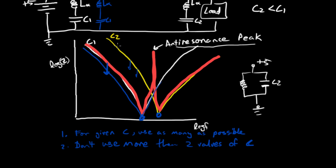And the reason is this anti-resonance peak. You can live with one as long as it's at a low enough frequency, which is usually the case if C1 is on the order of 10 microfarads and C2 is on the order of 0.1 microfarads. That anti-resonance peak is going to be low enough that it's not really going to affect your circuit or most circuits.